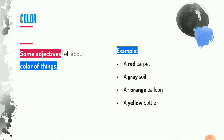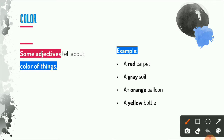Next we have adjective of color. Some adjectives tell about the color of a thing. For example: 'a red carpet,' 'a gray sweater,' 'an orange balloon,' and 'a yellow bottle.' Just like the adjective of size, the color adjectives here — red, gray, orange, and yellow — are also located before the noun.